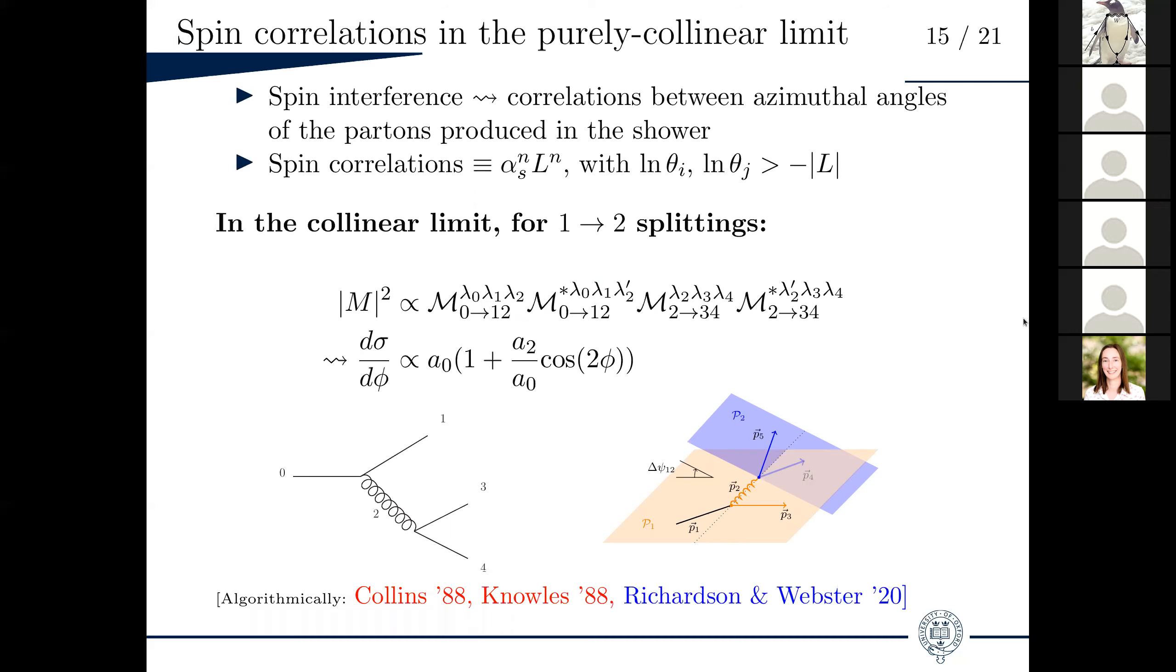But again, there are several reasons to include them. First one is that they appear formally at next to leading log. So if you want to claim full next to leading log accuracy, it's not really an option to neglect them. Second, they are easy to implement. And third, they can actually be observed. So they're important in certain analyses which probe spin.